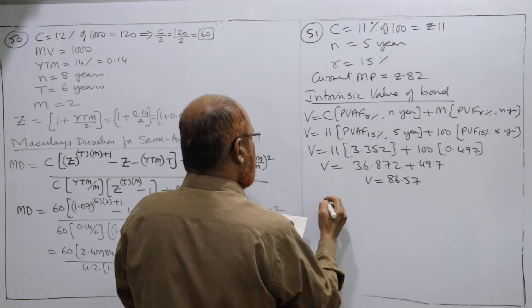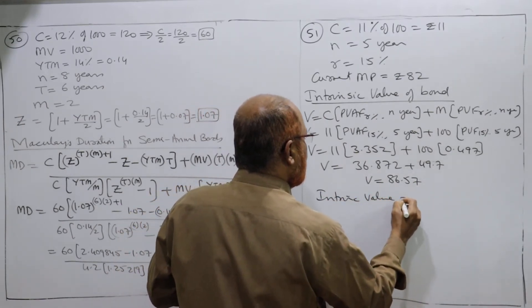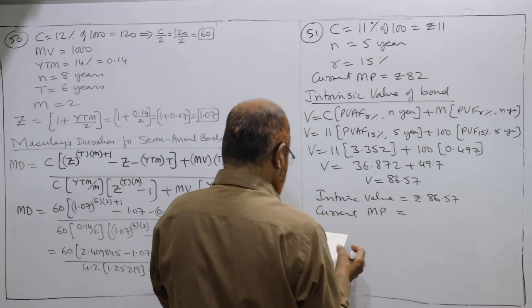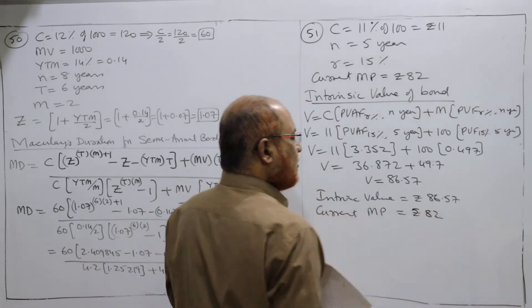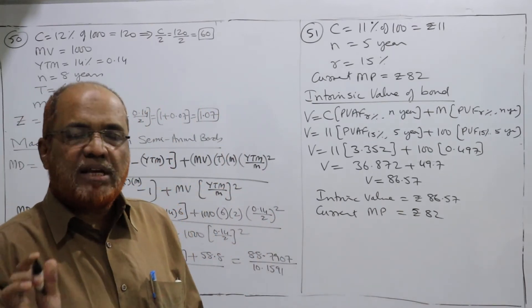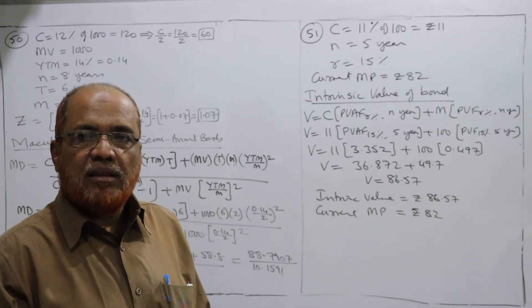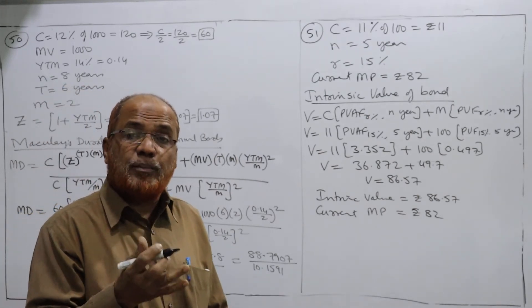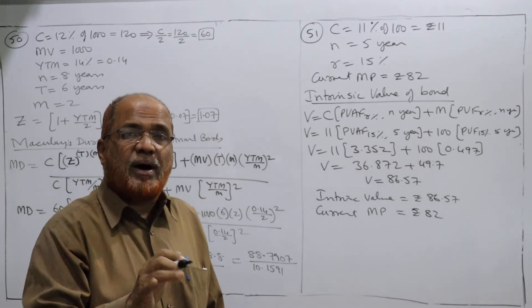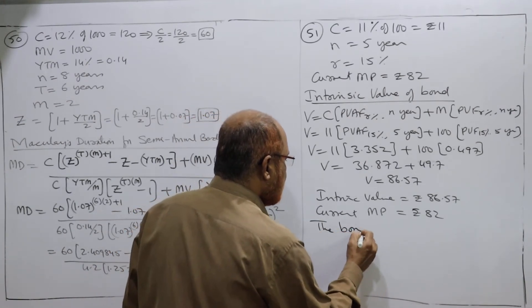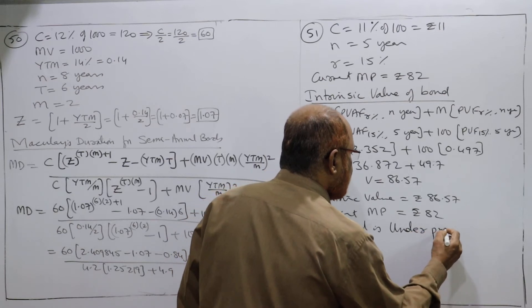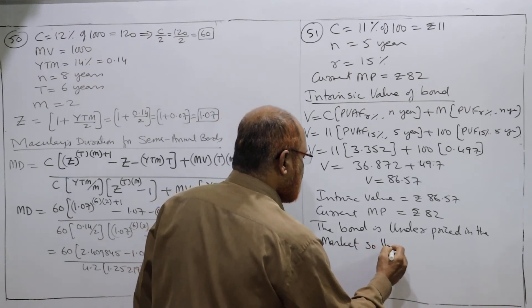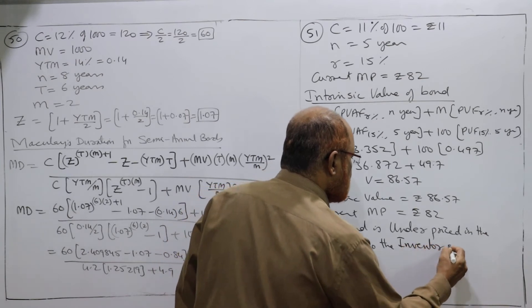So V equals 86.57 rupees. The intrinsic value is 86.57. The current market price of the bond is 82 rupees. In the market, the bond is bought and sold at 82, whereas the intrinsic value is 86.57. We can easily say the bond is underpriced in the market. Since it is underpriced, it is worth buying. We suggest the investor to go ahead and buy the bond.